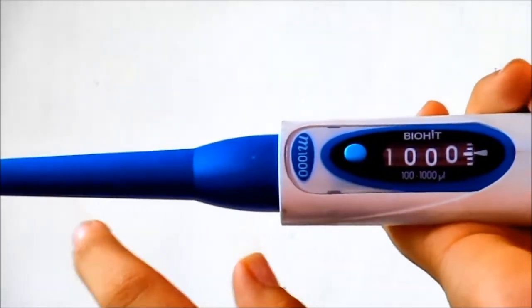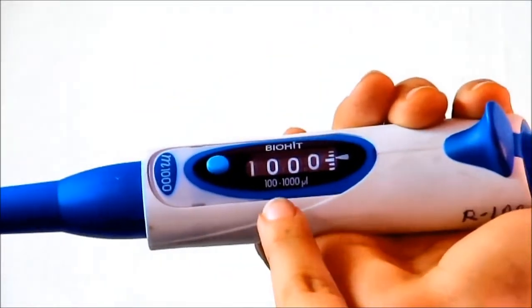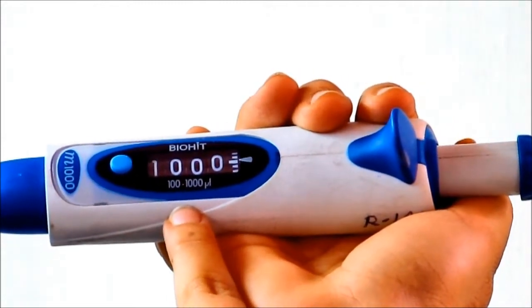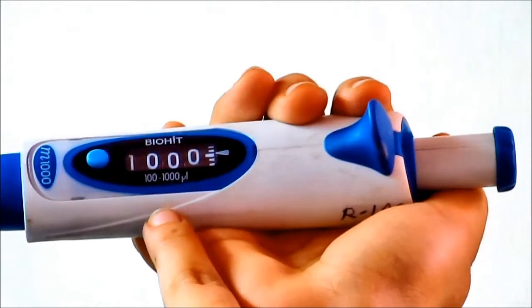Proceeding further we have a digital volume indicator that shows the volume that we adjust. Behind that is a tip ejector button.